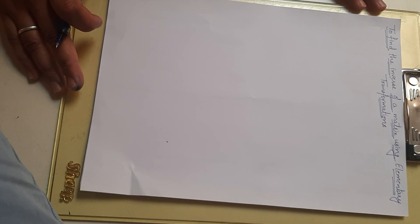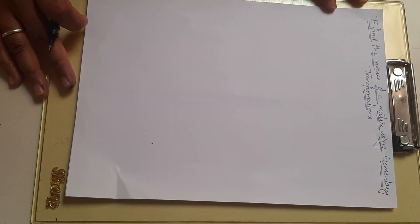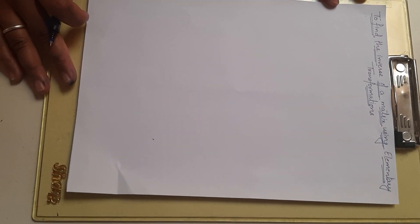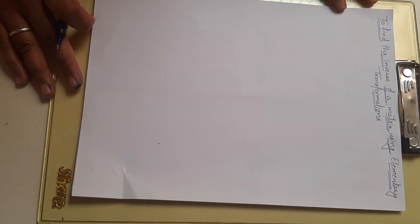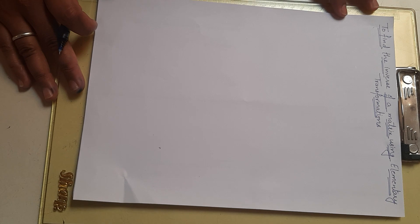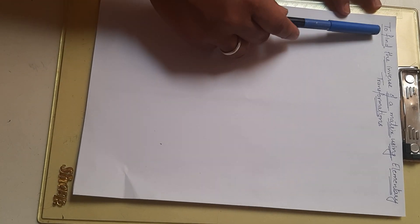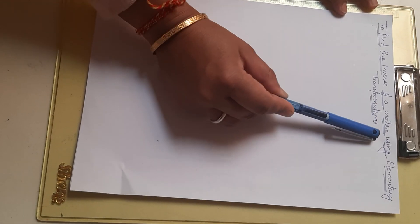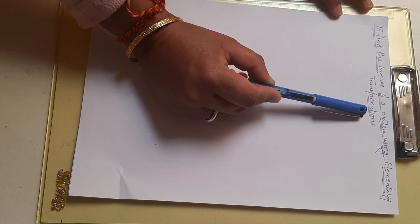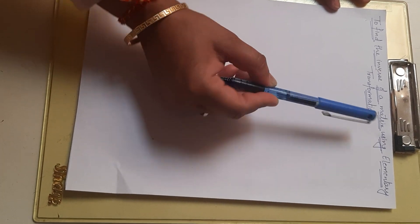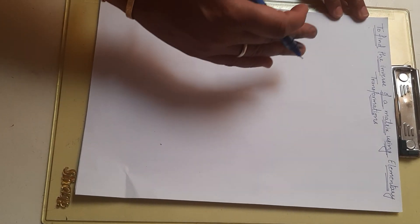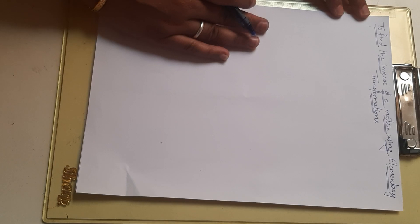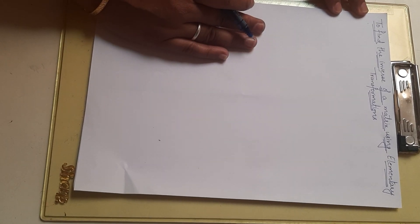Hello students, hope you all are doing good. In the previous video we learned how to find the inverse of a 2x2 matrix using elementary row or column transformations. Today's topic is to find the inverse of a 3x3 matrix using elementary transformations. In the previous video we did a 2x2 matrix; now we are doing a 3x3 matrix.